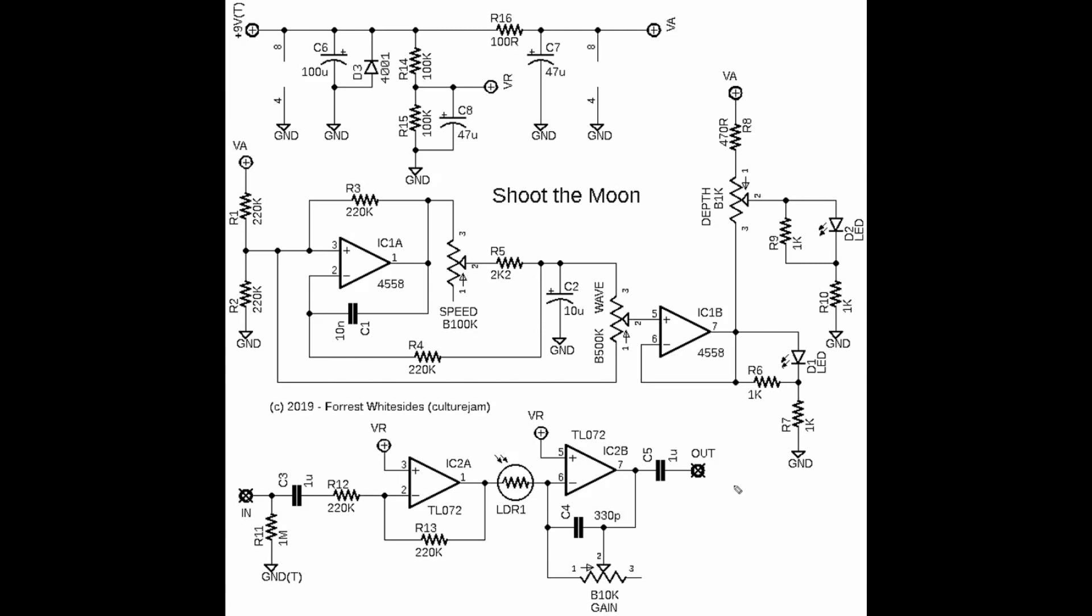We're actually going to start looking at the power section real quick just because there's something here that I think we haven't really seen in too many past schematics. So our 9 volts comes in here and then we see that we have these two symbols here that are labeled 8, 4, and ground. These are symbols for the power pins of the op amps. We have two dual op amps here and each one of them has a power supply pin and a ground pin.